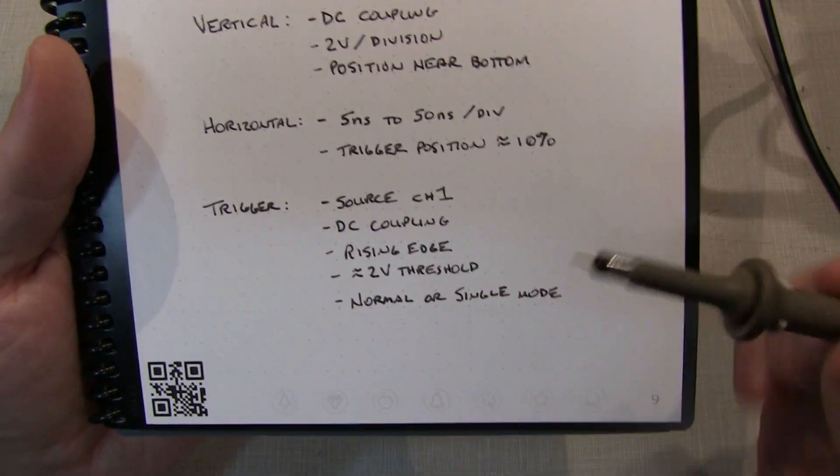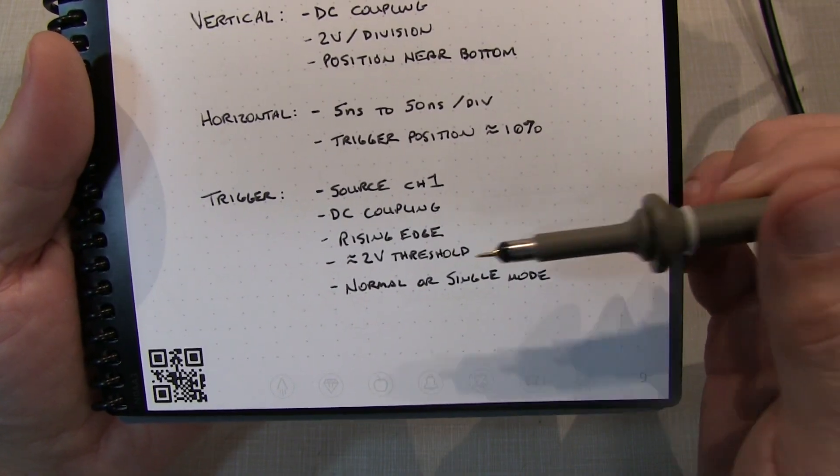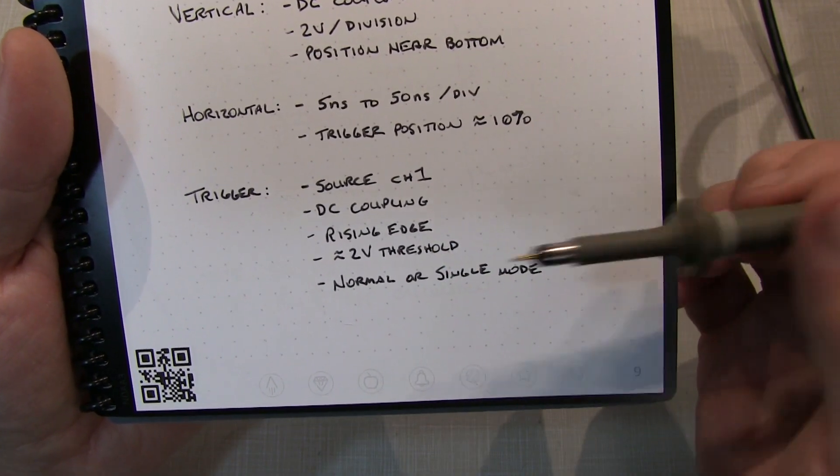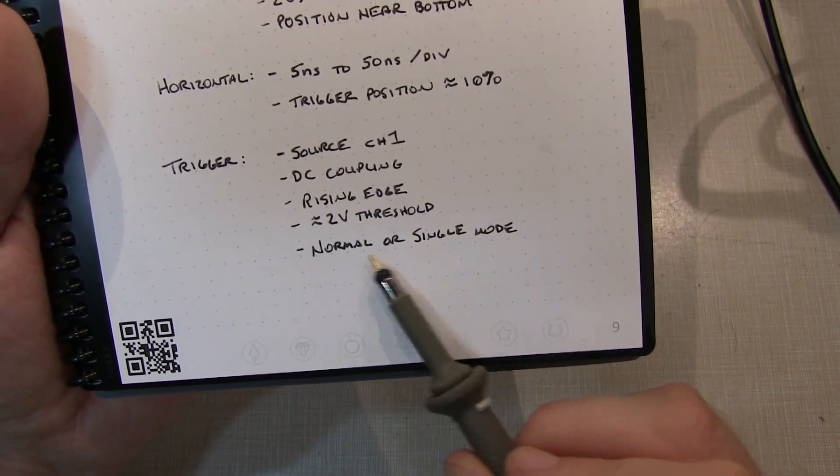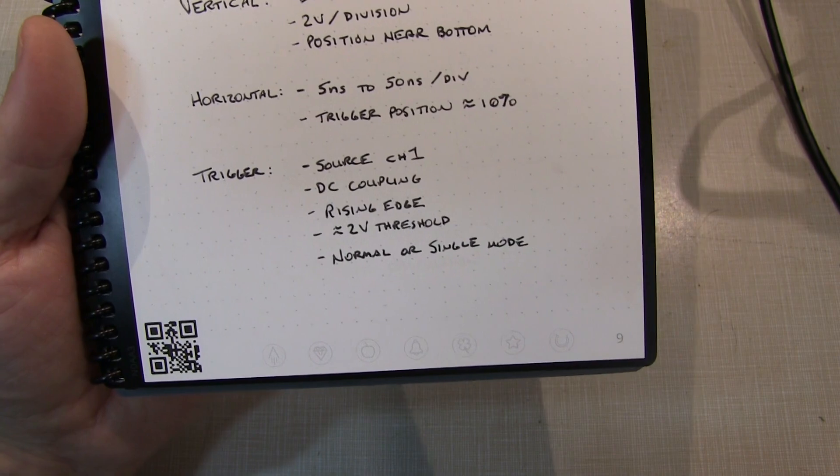And the triggering, as I mentioned, you really want to trigger on the signal that you're using - DC coupled, rising edge, about a 2-volt threshold. And then again, the normal or single mode, so that you only get a trace when the signal actually transitions.